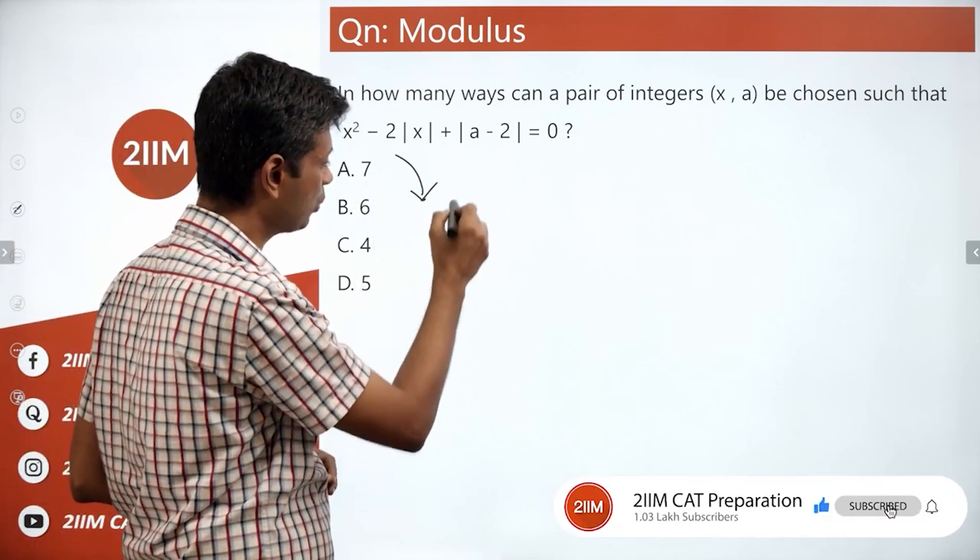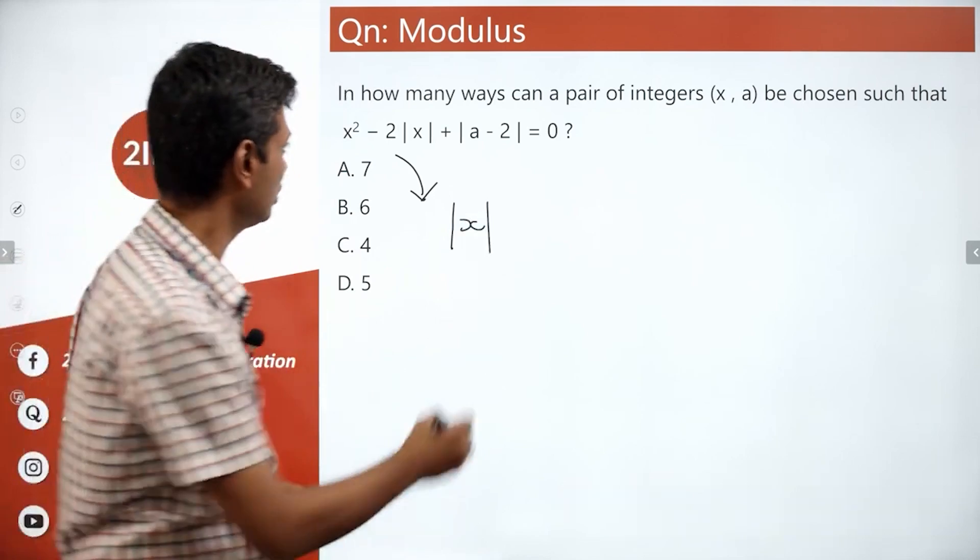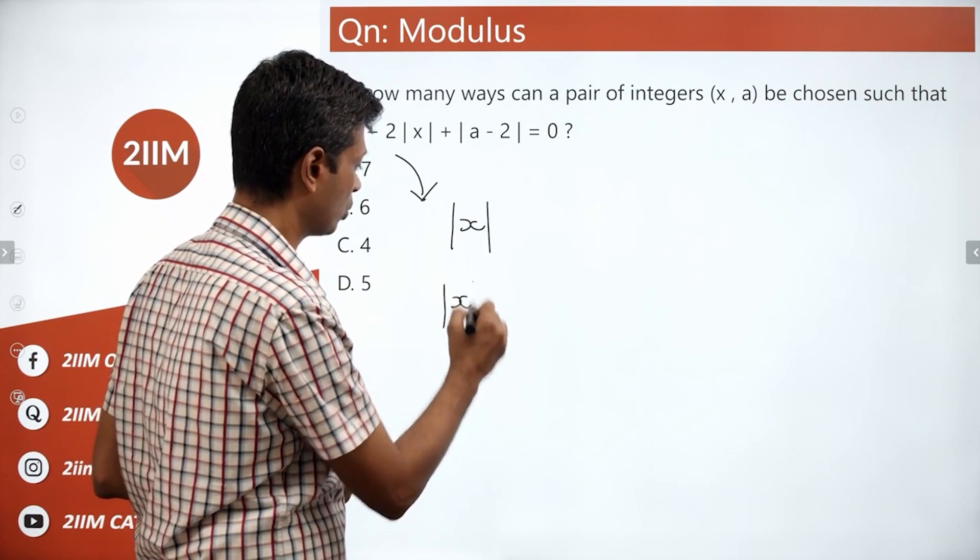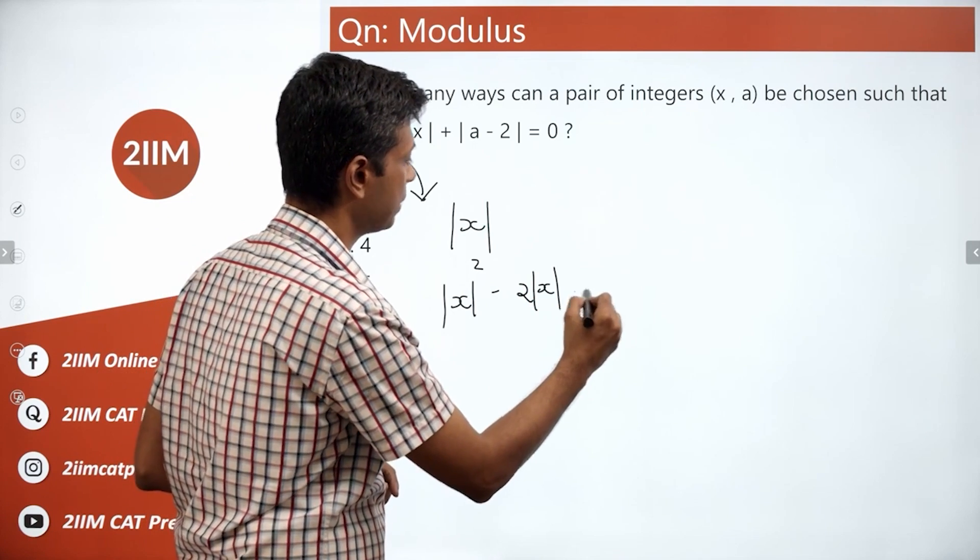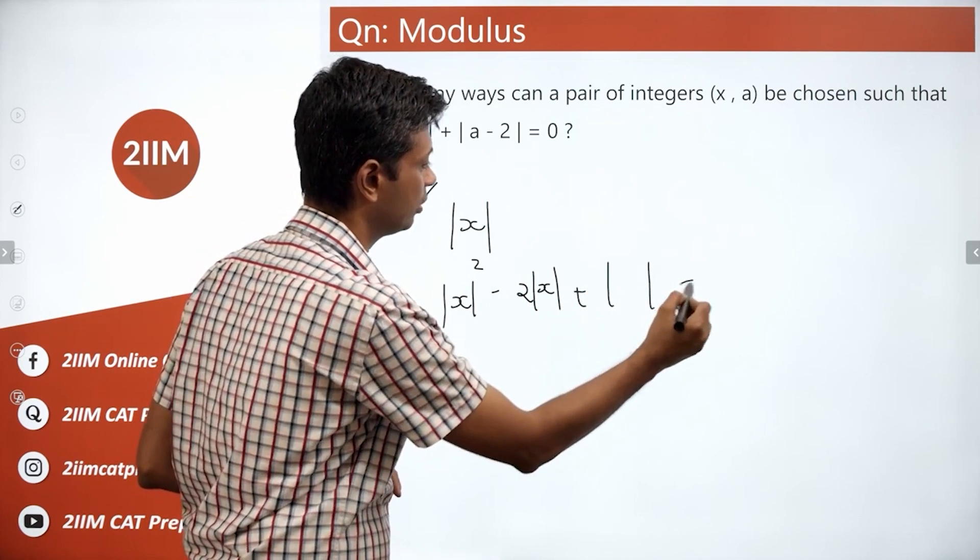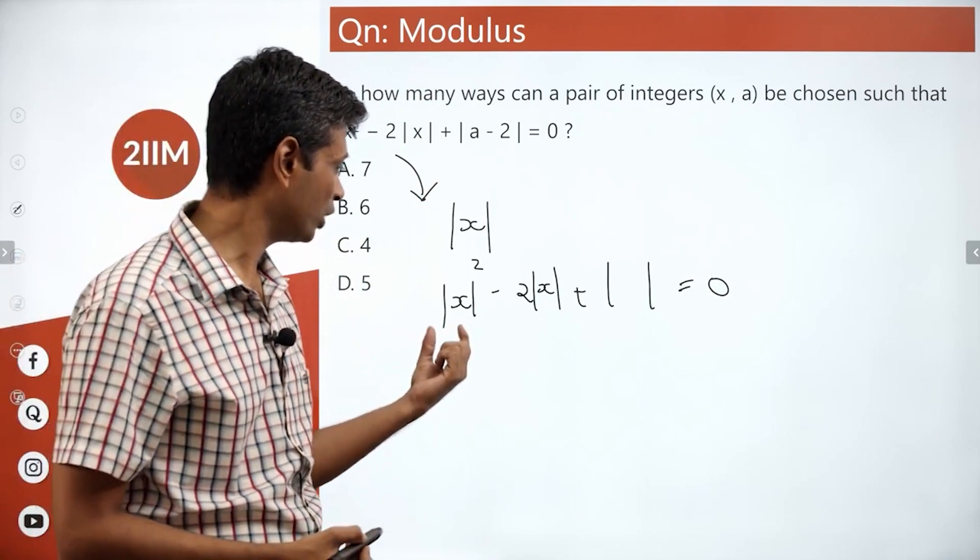This is a lovely question because it can be framed as an equation in mod x. So we have mod x squared minus 2 mod x plus a positive number is equal to 0.